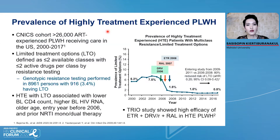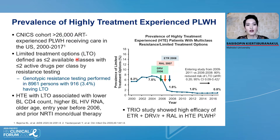Let's move to acquired HIV resistance — or resistance among patients receiving antiretroviral drugs. This data from the US tried to assess what is the prevalence of highly treatment-experienced patients among people living with HIV. This data is from a large cohort of more than 26,000 ART-experienced people living with HIV receiving care in the US. The definition of limited treatment options is defined as two or fewer available classes with two or fewer active drugs per class by resistance testing.